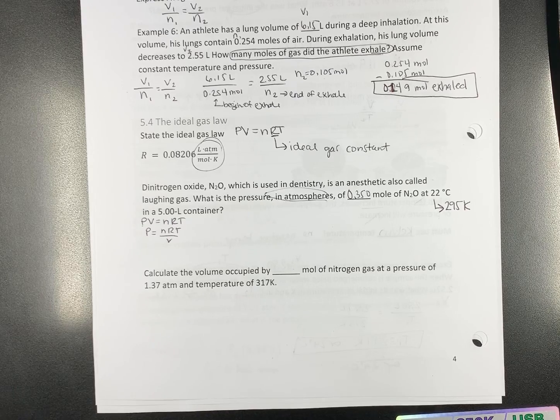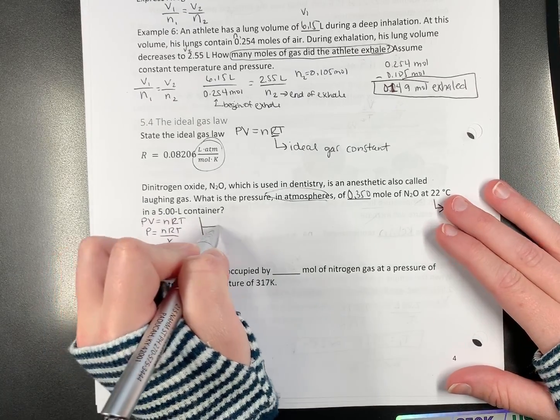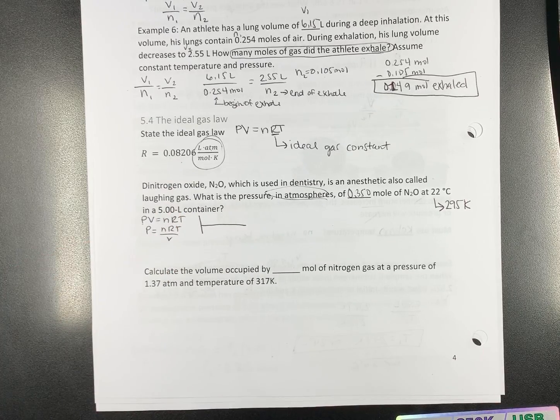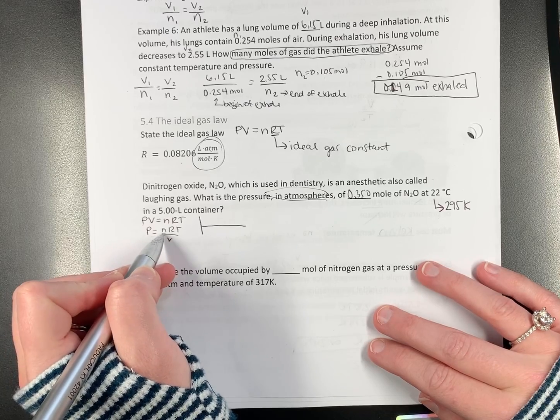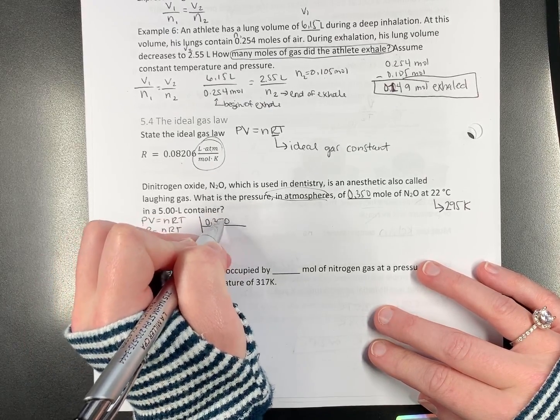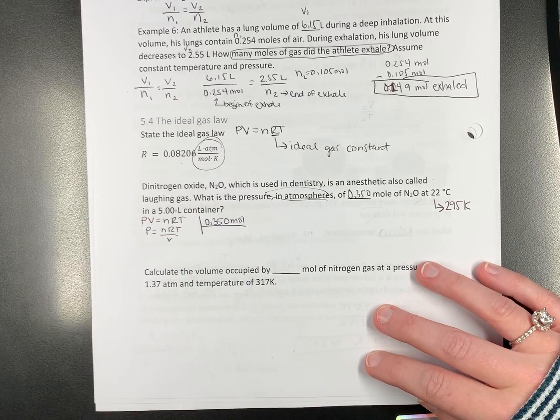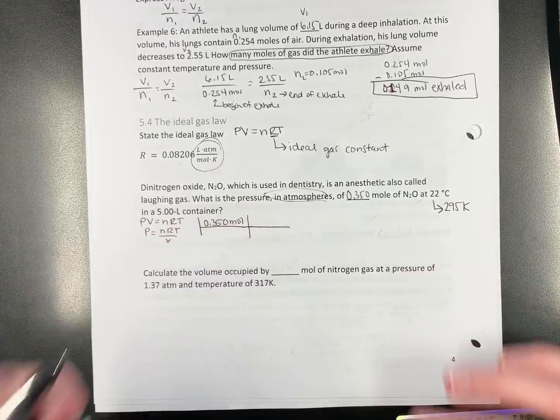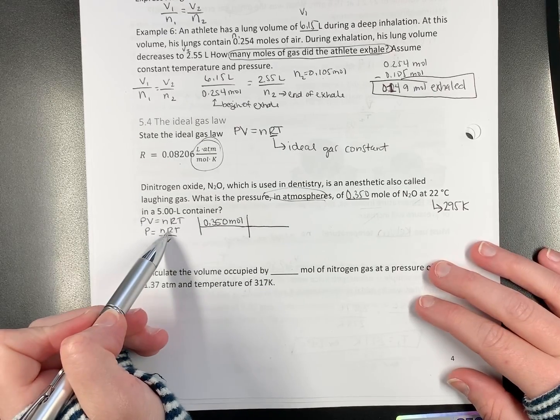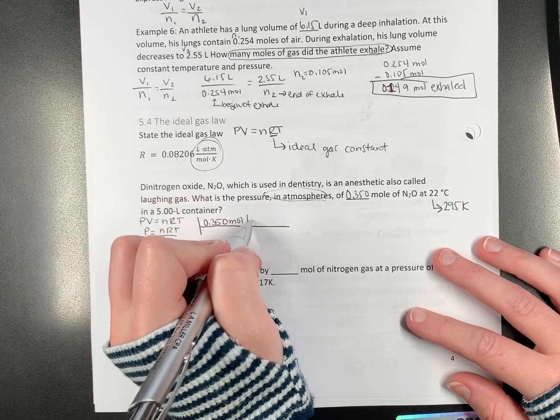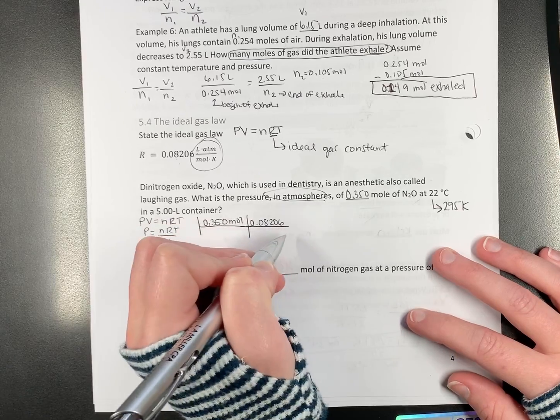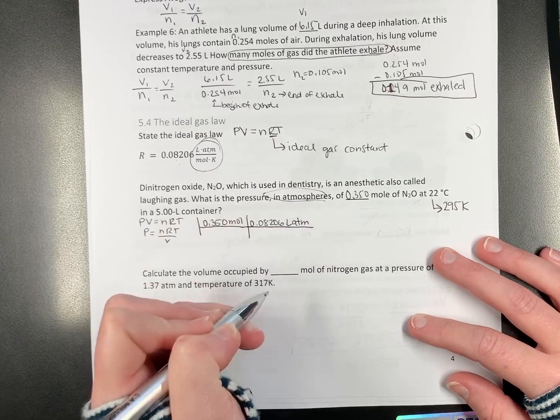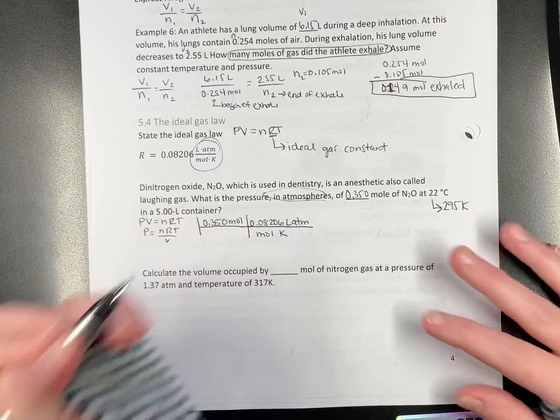Now, even if you do it algebraically to keep track of your units, it is easier to write it out in the factor label method. N is for moles. So, 0.350 moles. If it's above the fraction bar, it goes in the top. Now, here's where it gets tricky. R is in the top. So, that means you write the number in the top, 0.08206. And then you write the part that's in the top of the unit. So, that would be liter atmospheres. And then, mole Kelvin goes in the bottom.